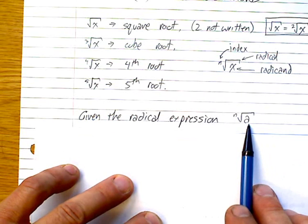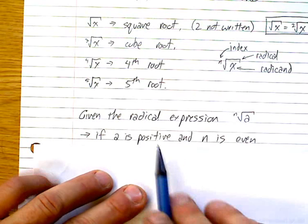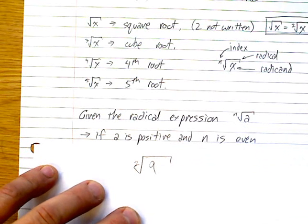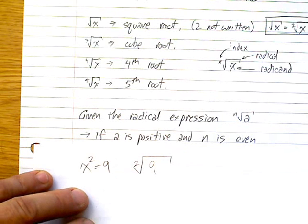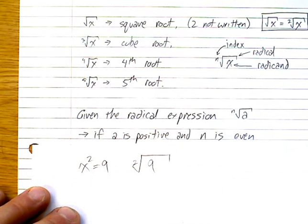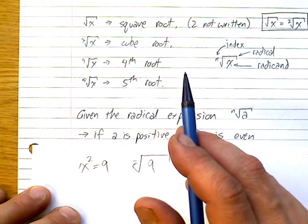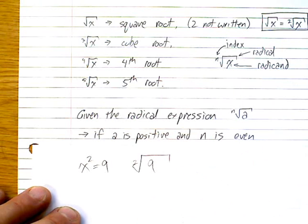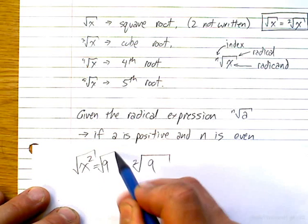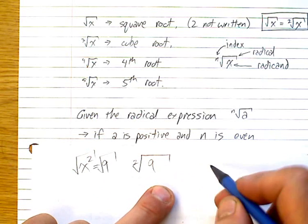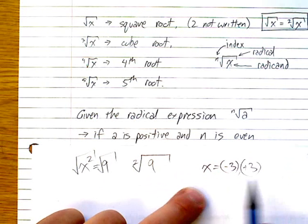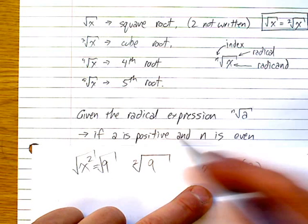If a is positive and n is even — say the square root of 9 — consider: if x² = 9, how do you solve for x? To undo squaring you square root both sides. We end up with two possible answers: x could be negative 3 or positive 3, because both (−3)² and (3)² equal positive 9.